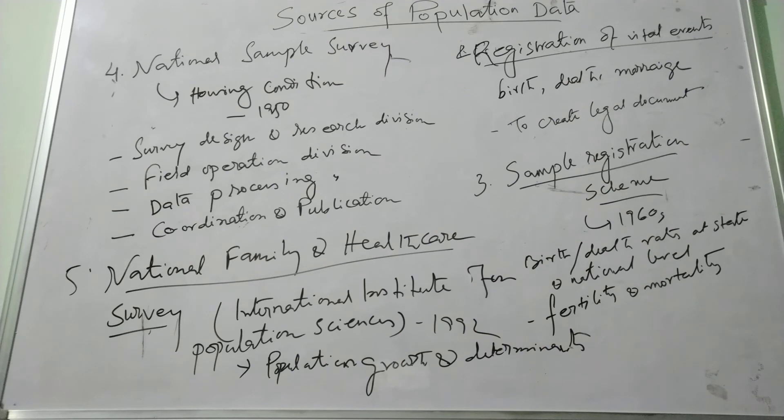They are covering the following characteristics of the population data like fertility, morbidity, unwanted fertility, and family planning use.